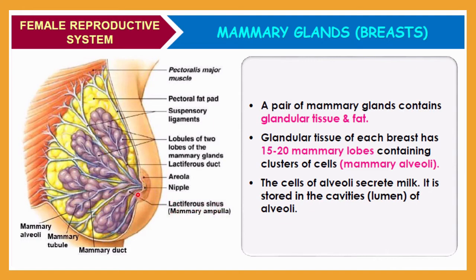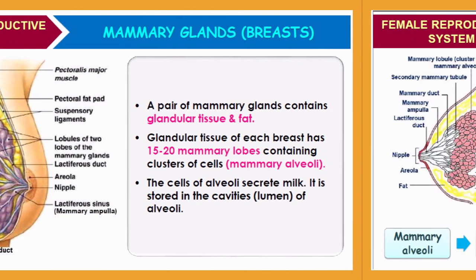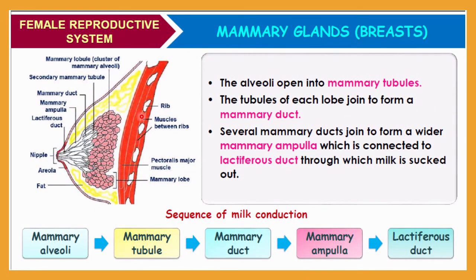The mammary gland structure includes the lactiferous duct, lobules, suspensory ligament which holds the breast, pectoral fat, pectoralis major muscle which plays an important role in holding the breast tissue, mammary ducts, and mammary tubules. The balloon-like or sac-like structures are the mammary alveoli, which open into the mammary tubules.